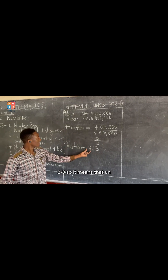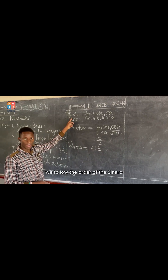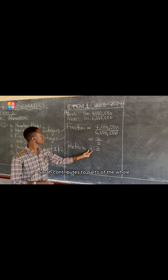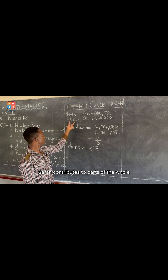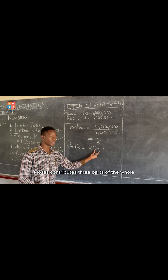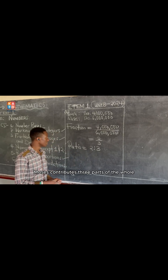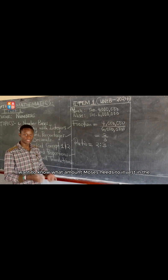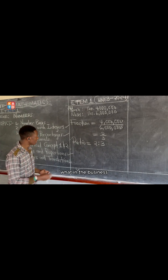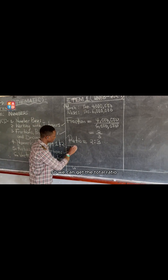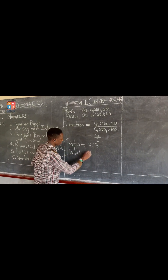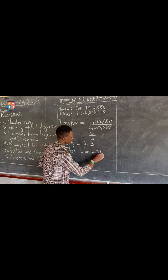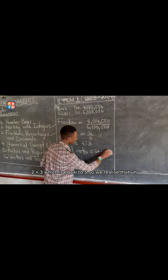It means that when we follow the order of the scenario, Sarah contributes two parts of the whole and Moses contributes three parts of the whole. We want to know what amount Moses needs to reinvest in the business. So we can get the total ratio, which is 2 plus 3, which is equal to 5.